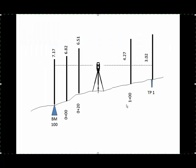For instance, I want you to consider a circuit that has three setups in it, going from benchmark 100 to benchmark 200. Those are not elevations, those are just benchmark numbers, names. In this case, we see an instrument that has taken a backsight on benchmark 100 with a reading of 7.17, and our turning point is on the right side of the screen here with a reading of 3.02.